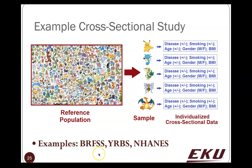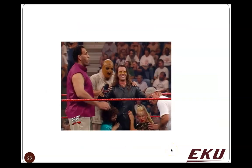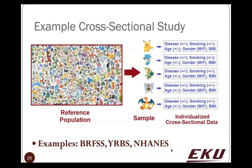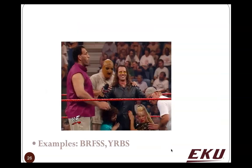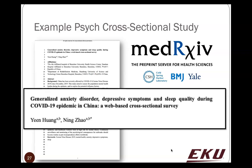Examples we covered in class include the BRFSS — Behavioral Risk Factor Surveillance Survey — the Youth Risk Behavior Survey, and the National Health and Nutritional Examination Survey, or NHANES. I don't love the way BRFSS and YRBS sound when pronounced as 'Burfess' and 'Yurbis,' but if you work for a health department you will likely hear those nicknames. I joked that 'Burfess' and 'Yurbis' would be good professional wrestling names.